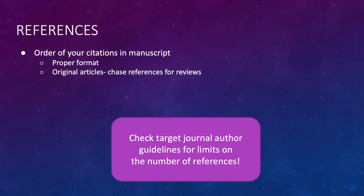If you read another review article on a subject and there is information in it that came from an article they cited, you don't cite the review article — you go to that original source and cite it, because that's the actual source of the information.